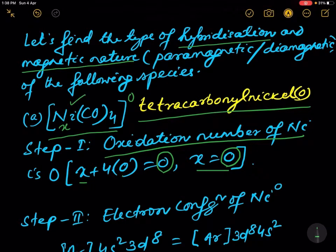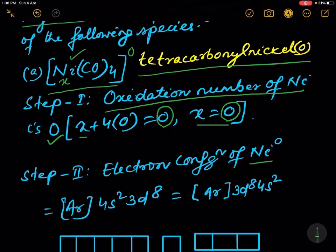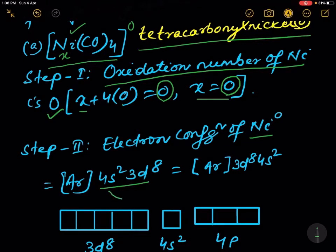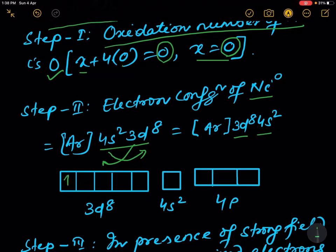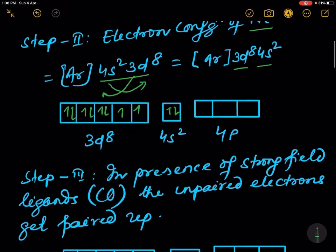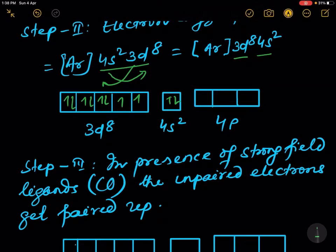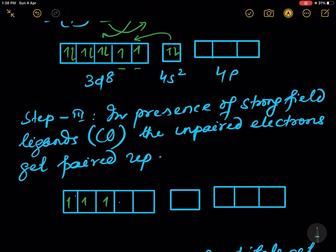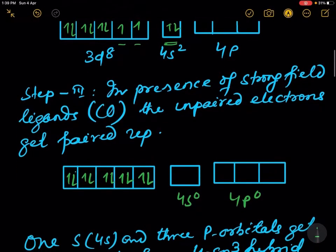The oxidation number of nickel in this complex is zero. The electron configuration of nickel is 4s2 3d8, but 4s is written after 3d. So 3d8 has eight electrons and 4s2 has two electrons, and 4p is vacant. In the presence of strong field ligands like CO, these electrons get paired off with the unpaired electrons — one, two, three, four, five, six, seven, eight — and these two electrons jump to the inner 3d.